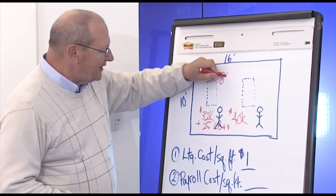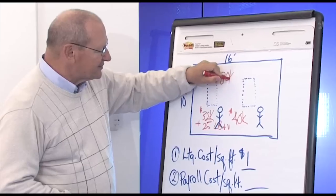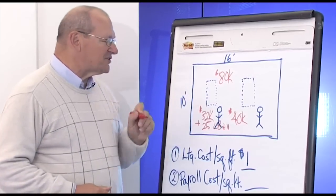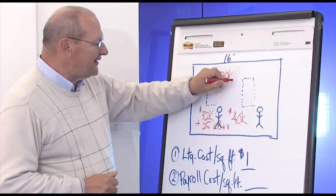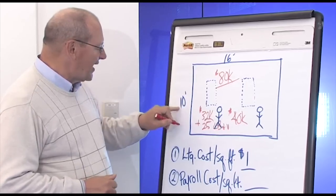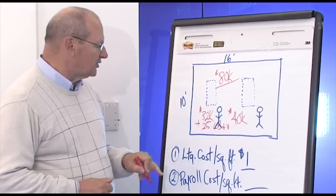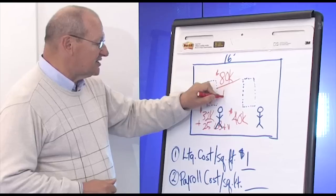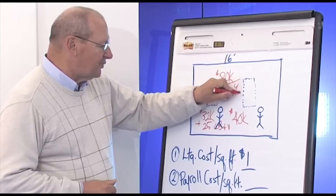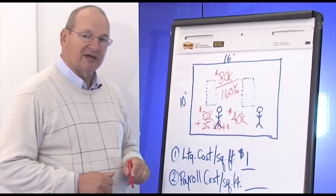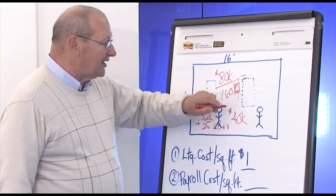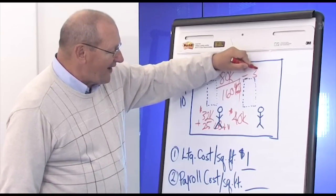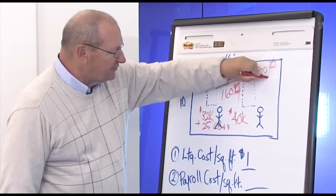What is the cost per square foot for payroll? Divide $80,000 by the area of these two cubicles, 160 square feet. Go ahead, pause the video, and do the calculation. $80,000 divided by 160 equals $500 per square foot.